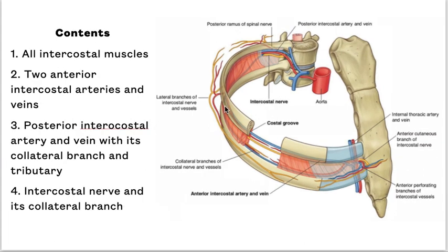The contents are all the intercostal muscles, the two anterior intercostal arteries and veins, the posterior intercostal artery and vein with its collateral branch, and the intercostal nerve with its collateral branch.